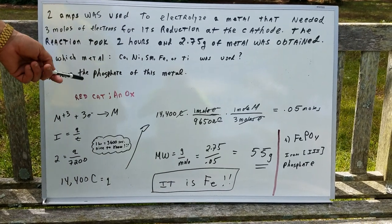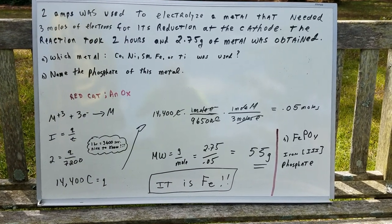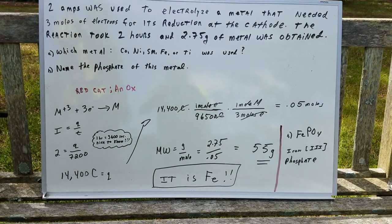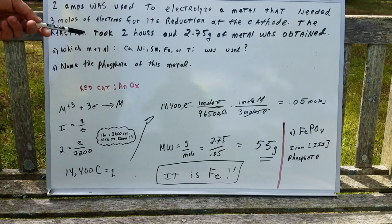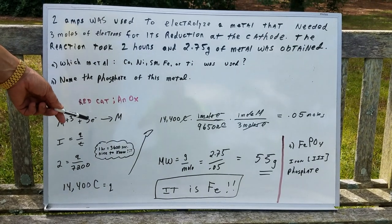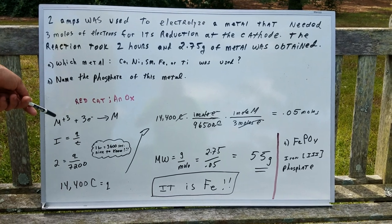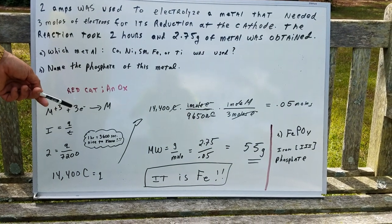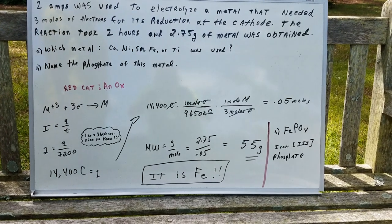We all remembered red cat and an ox. And I happen to love cats, so this is easy for me to remember. Since it's at the cathode, I'm going to write the reduction. So if it required three moles of electrons, the charge of the metal was plus three. So M³⁺ plus three moles of the electrons gives the metal M.